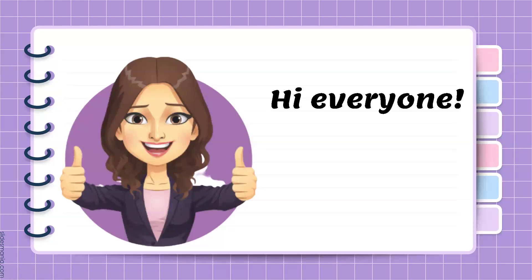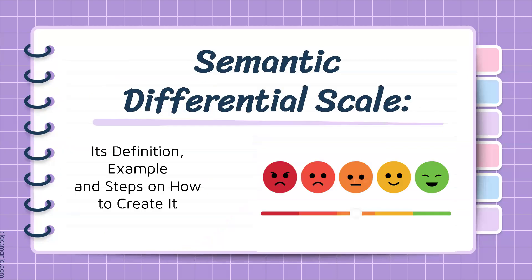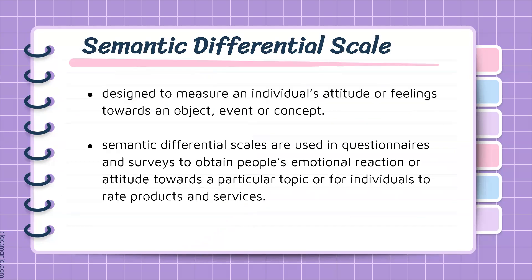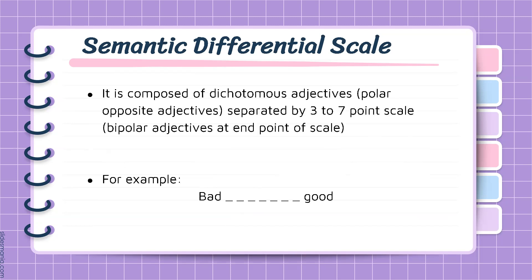Hi everyone, this is Teacher Rutel, and today I'll be discussing the topic Semantic Differential Scale — its definition, example, and steps on how to create it. Semantic Differential Scale is designed to measure an individual's attitude or feelings towards an object, event, or concept. These scales are used in questionnaires and surveys to obtain individuals' emotional reaction or attitude towards a particular topic, or for individuals to rate products and services. It is composed of dichotomous adjectives, meaning polar opposite adjectives, separated by a 3 to 7 point scale.